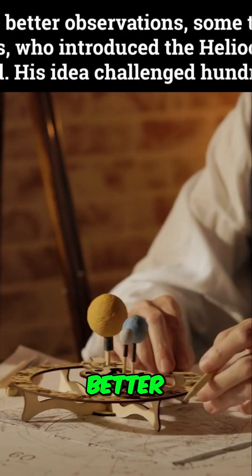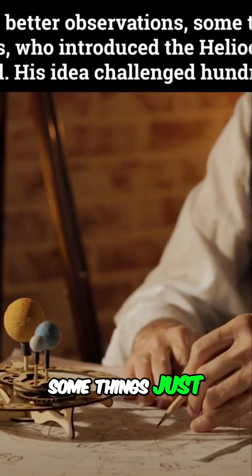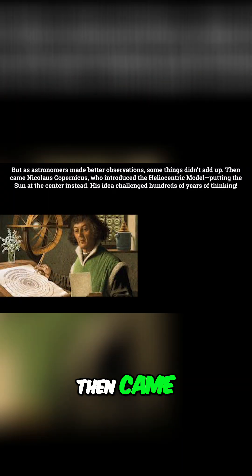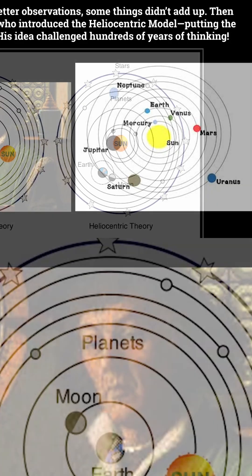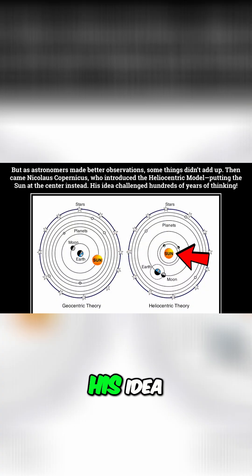But as astronomers made better observations, some things just didn't add up. Then came Nicholas Copernicus, who introduced the heliocentric model, putting the sun at the center instead. His idea challenged hundreds of years of thinking.